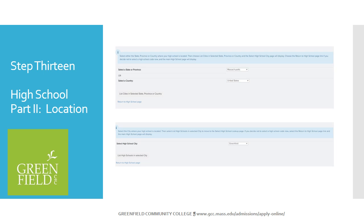Once you click Look Up School Code, a series of screens comes up. First, select the state and country where you attended high school and then do the same thing with the city. You will receive a drop-down screen with the list of schools in that selected city. Select the school you attended and click Return to High School page.